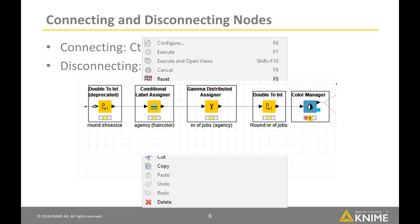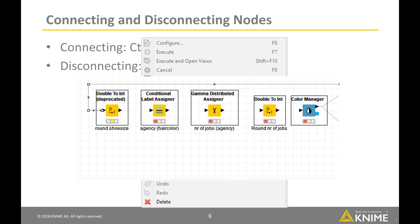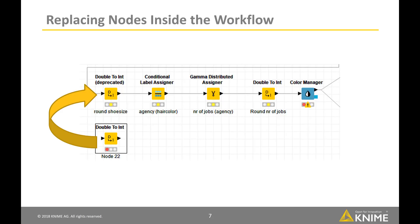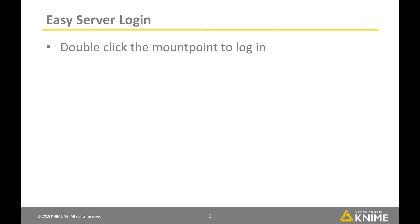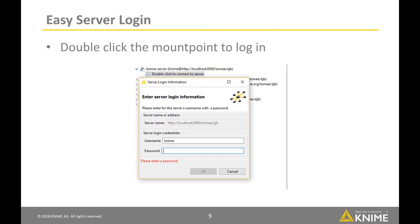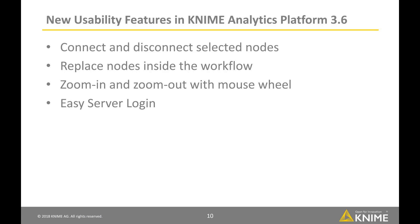Vice versa, if you have a bunch of disconnected nodes and you want to disconnect them, just select all of them, right click and select Disconnect nodes. We also added a new functionality that allows you to replace a node with another node — simply drag a node from the editor and drop it onto another node. You can zoom in and zoom out from the editor with Ctrl plus the mouse wheel, and to login to a server from KNIME Explorer, just double click it and the server login page will pop up automatically.